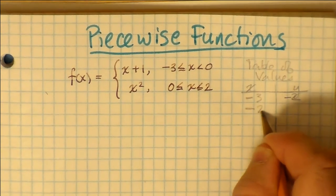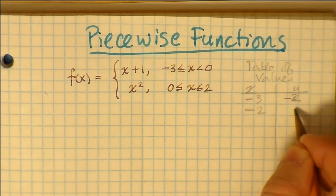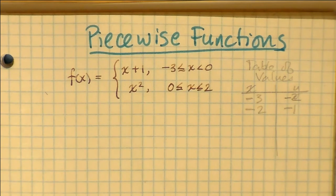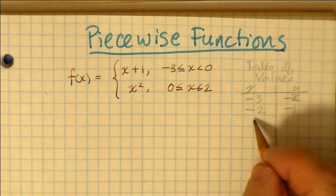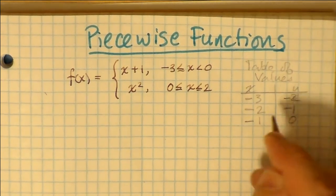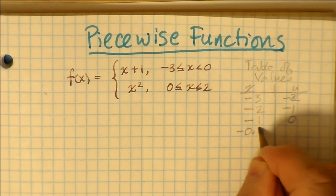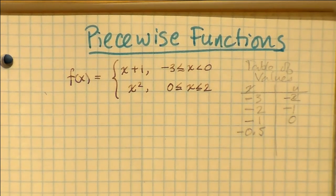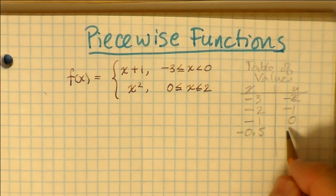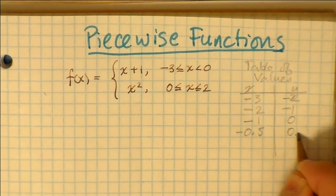So we can make a table of values where we plot negative 3 and we get negative 2, and that's because negative 3 is part of the domain of the first piece. It's on the domain where you see negative 3 less than or equal to x less than 0, so we put it into the formula x plus 1. In fact, all of the numbers I'm using here, negative 2, negative 1, and negative 1 half, are all defined on that same part of the domain where it all gets plugged in to the formula x plus 1.